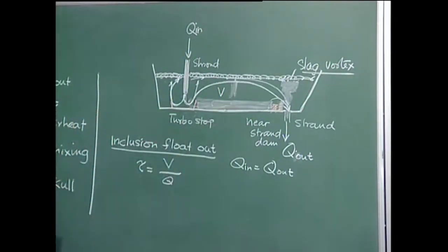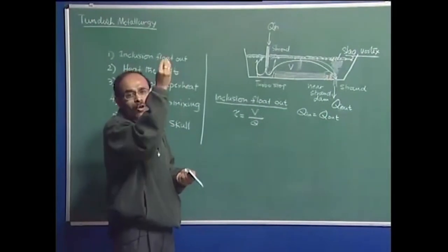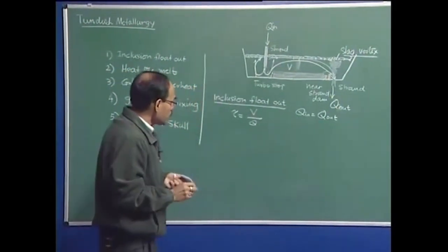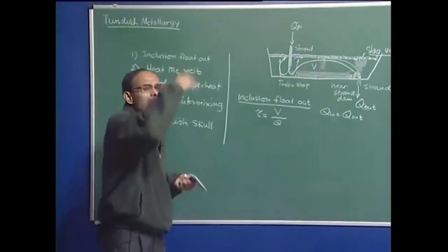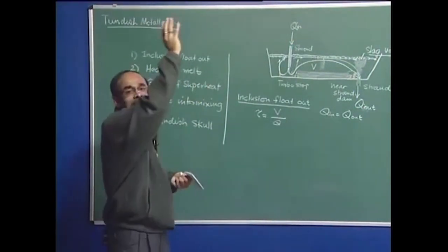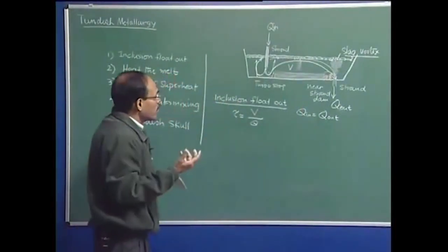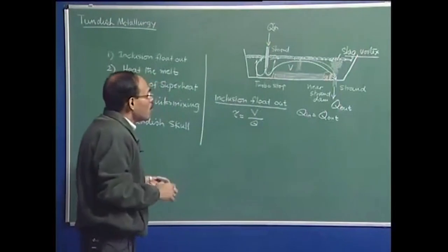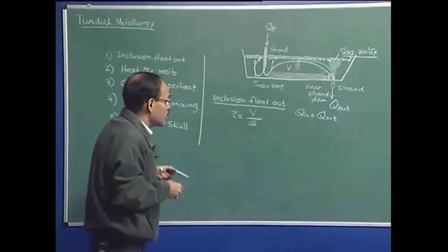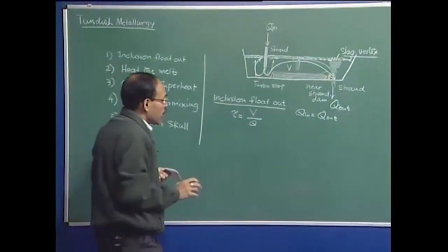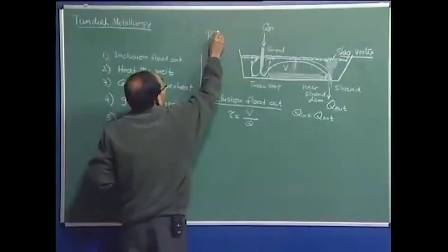If you have an intense amount of stirring in the Tundish, there is going to be very little scope for inclusion float out, because inclusions are very small particles. They have very low Stokes rising velocities — inclusions having 100 micron or 80 micron size particles have very low rise velocities. So if you have good turbulence and churning in the system, the inclusion does not get a chance to float out. For inclusion float out, we require not too much mixing, but rather some amount of plug flow or dispersed plug flow — a quiescent flow moving gradually from the inlet region to the outlet region. That kind of flow gives rise to inclusion float out.